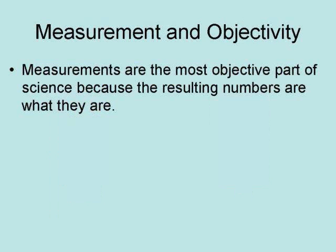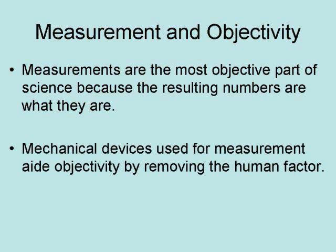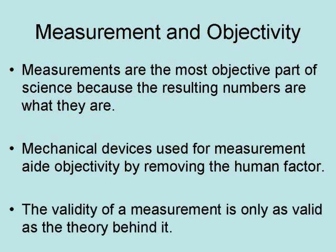Measurements are the most objective part of science, because the resulting numbers are what they are. The use of mechanical devices for measurement aids in objectivity by removing the human factor. The validity of a measurement is only as valid as the theory behind it.